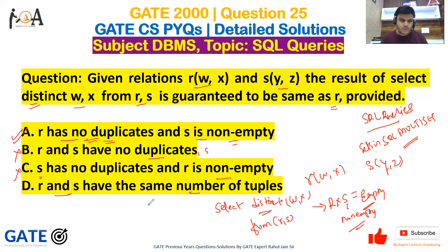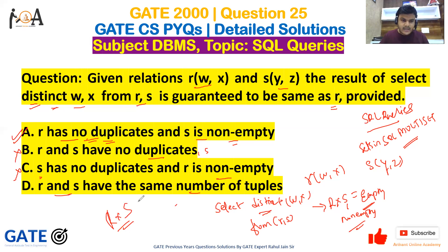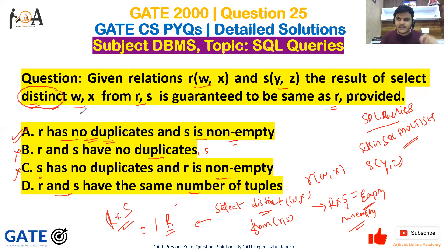Option C says R and S have the same number of tuples, meaning both are non-empty — that is okay. But we still need the DISTINCT keyword condition to work correctly. The result of SELECT DISTINCT W, X from R cross S would not necessarily equal R. So only Option A is correct: R has no duplicates so DISTINCT removes duplicacy, and S is non-empty, so the result is guaranteed to equal R. Option A is the correct answer for this GATE question.